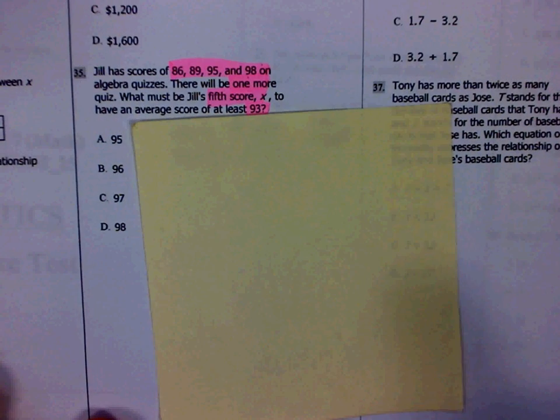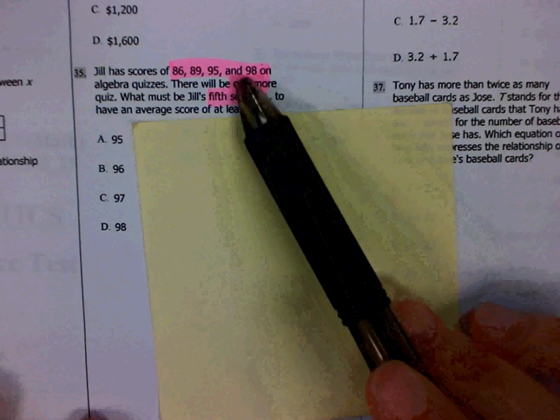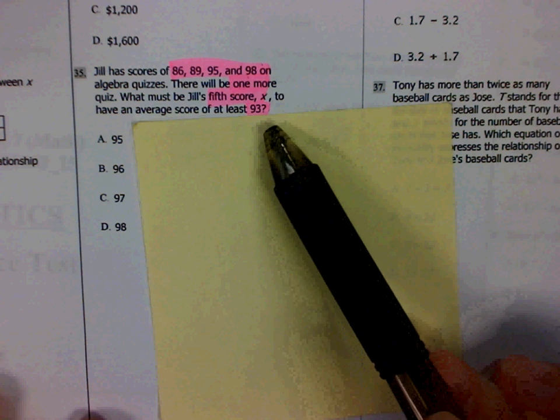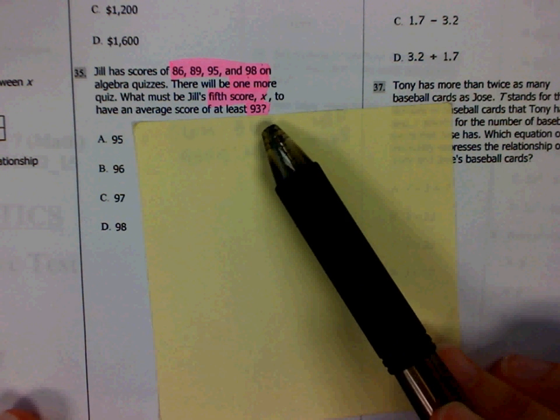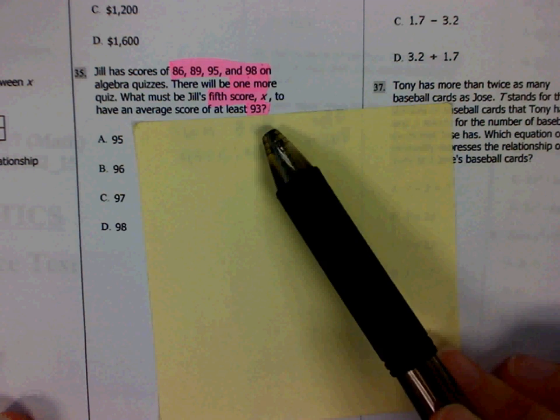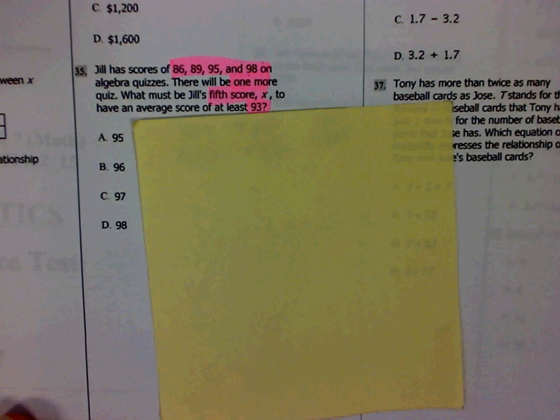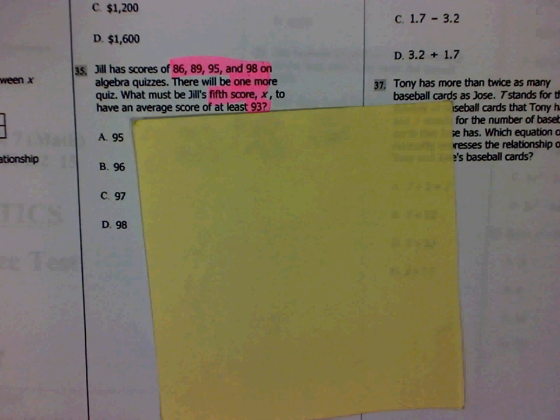Today we're going to practice finding the missing score when given a certain mean that we're trying to achieve. As I read this problem to you, some of the important information is already highlighted, but I'm going to re-highlight the important information so that we know what we're solving for.